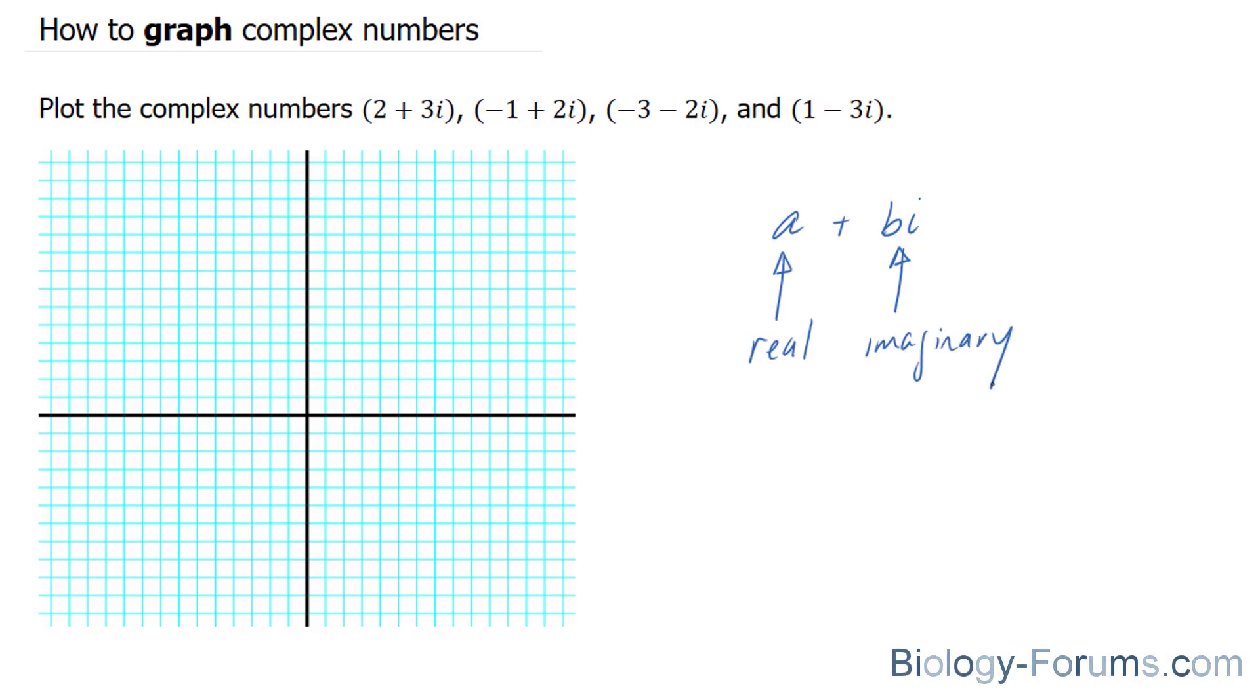That being said, let's take the first complex number, 2 plus 3i. This 2 is the real, and this 3i is the imaginary.